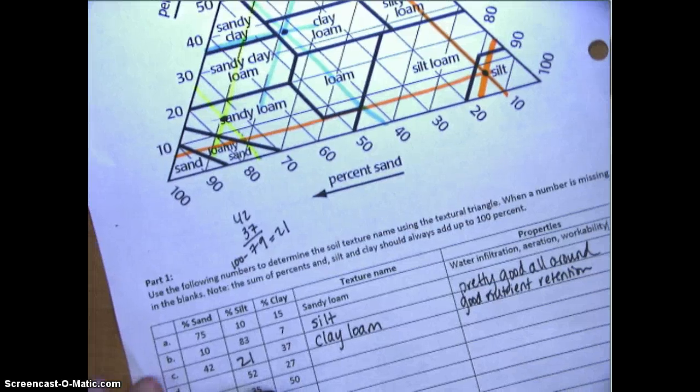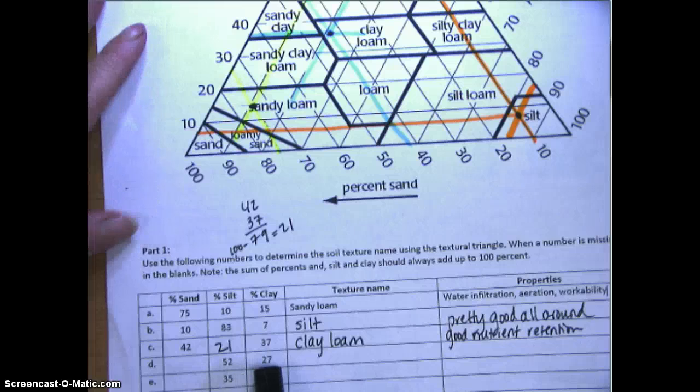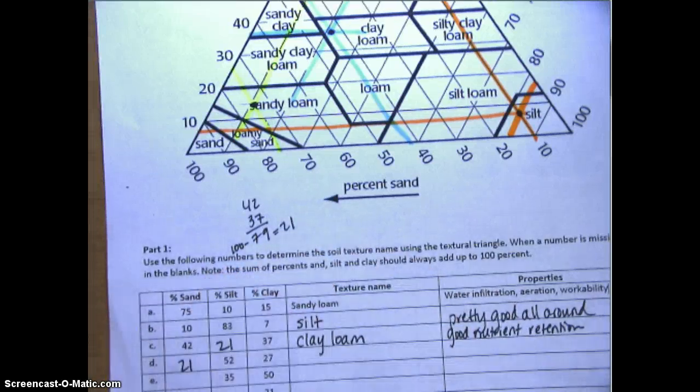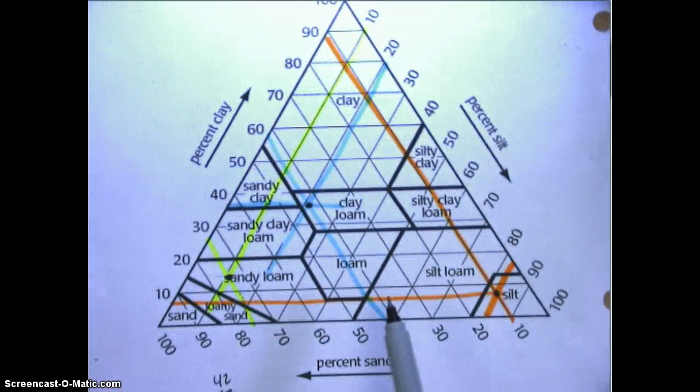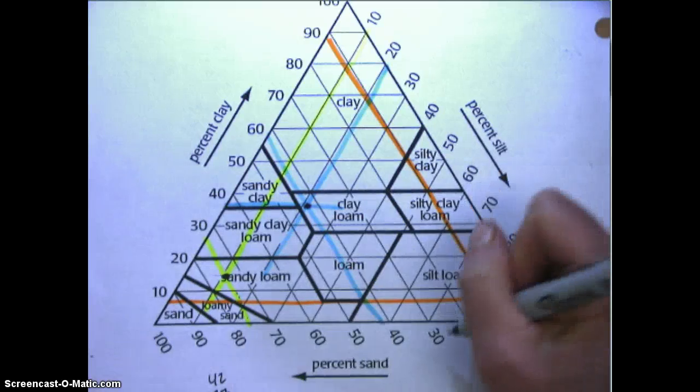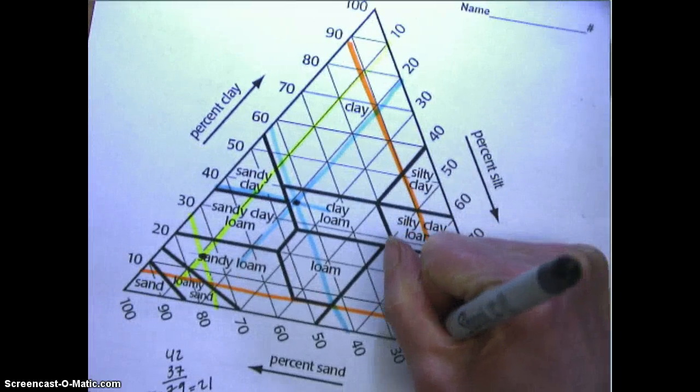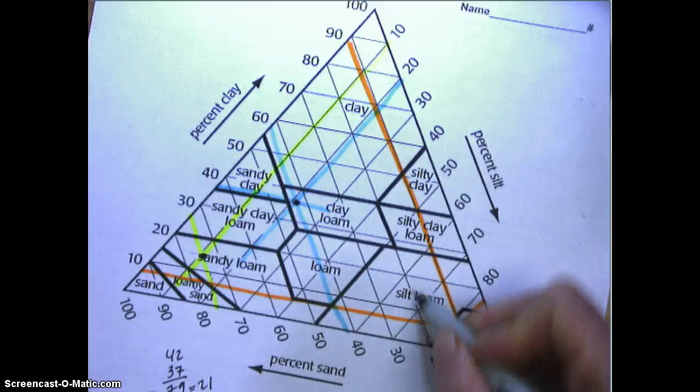For D we're going to have to figure out again - 52 and 27 is 79, and 100 minus 79 would be 21% sand. So 21% sand, we'll start with the chart. 21, and I'm just going to do it in this pen. So 21% sand would be somewhere around in here. Remember you're going to go not the right line but the one that goes to the left.